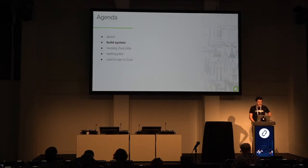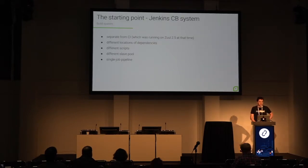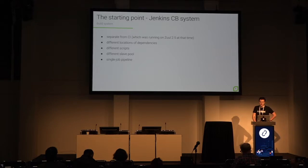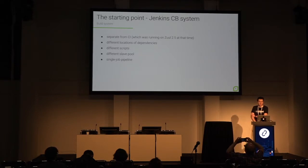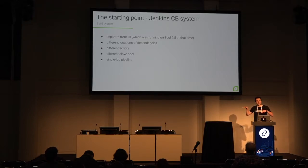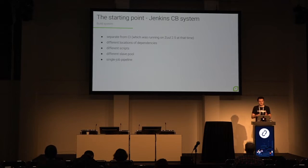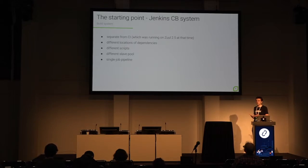Let's talk about how the build system looks and its history. Before migrating to Zuul version 3, Tungsten Fabric had a continuous build system on Jenkins that was totally separate from the continuous integration system. It had duplicated sets of scripts, duplicated dependency locations, and a different set of slaves for building. This required a lot of manual synchronization — when important things changed in the code, build scripts had to be synchronized between the CI system and the Jenkins continuous build system. The build system worked well, but it required more work.